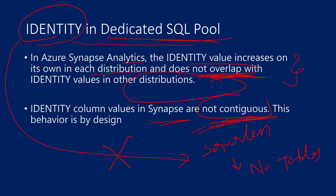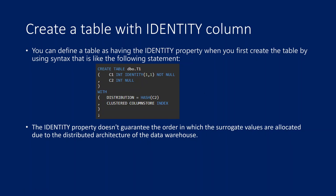So you'll see this non-contiguous behavior — identity values are not in sequence order. However, across all your distributions, no identity column values will overlap. The same value assigned to one row will not be assigned to any other row. This is the main point to take away: identity property does not guarantee order in Azure Synapse because it uses a distributed architecture. This is an important interview question — you should be able to explain why identity columns are not continuous in Synapse.